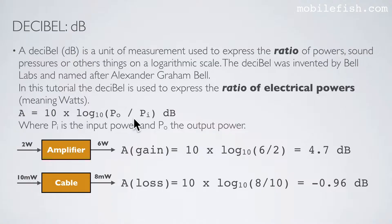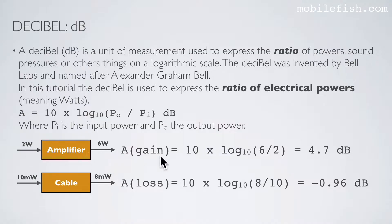Here is an equation to calculate the decibel value, where PI is the input power and PO is the output power. For example, if this is an amplifier, this is the input power and this is the output power. Because the output power is greater than the input power, it is a gain. The equation is now 10 times log base 10 of 3 — this is the output power and this is the input power — equals 4.7 dB.